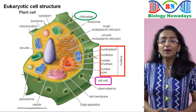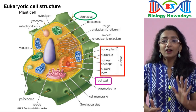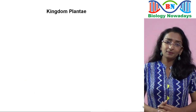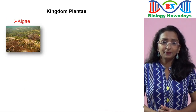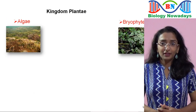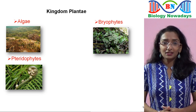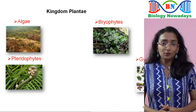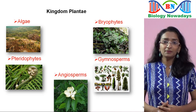The members of Kingdom Plantae belong to five main groups: algae, bryophytes, pteridophytes, gymnosperms, and angiosperms.